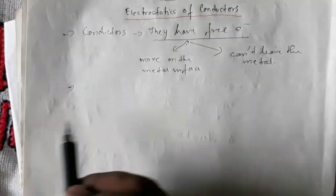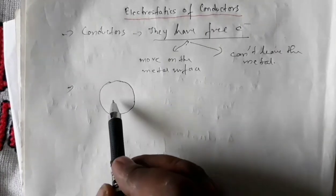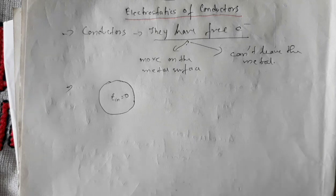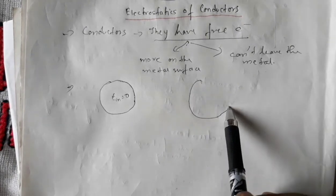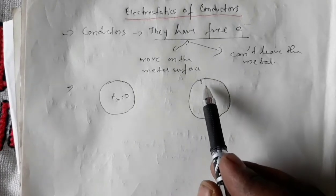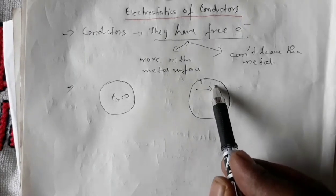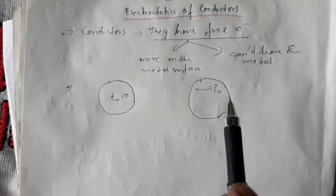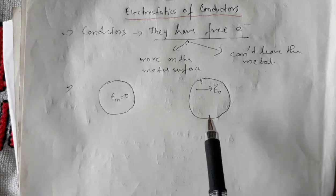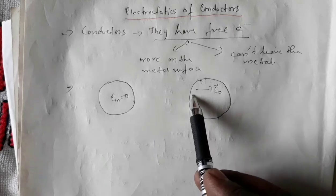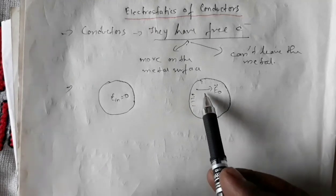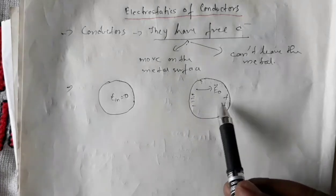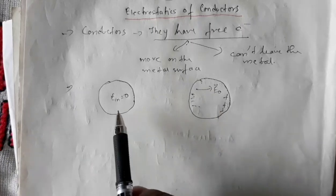The first property of a conductor is that the electric field inside the conductor will always be zero. Suppose a conductor is subjected to some external electric field in a certain direction. The free electrons will rearrange themselves so that the resultant electric field inside the conductor is zero. The free electrons accumulate on one side, developing excess negative charge, with corresponding positive charge on the other side — these are the induced charges.